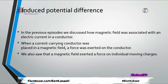Induced potential difference — as the name indicates, 'induced' means generated or produced, something new that was not present. We are going to produce a potential difference. We already discussed the definition of potential difference, meaning the generation of voltage and current. In previous episodes, we discussed how a magnetic field is associated with an electric current in a conductor. Over the past ten episodes I have been trying to show how magnetic field relates to electric current, and now we will use this in a very useful way in generators.